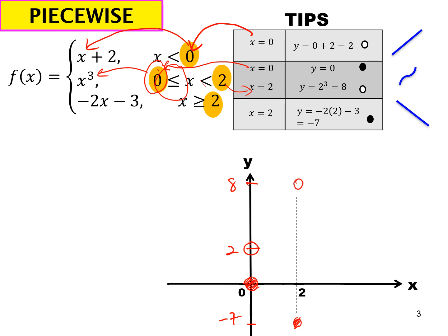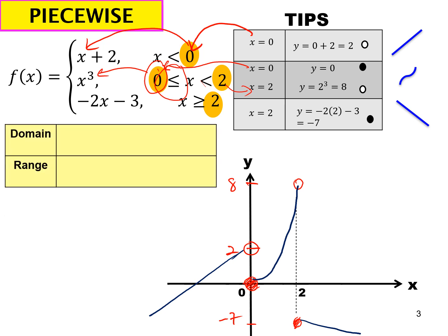To sketch the graph: for x less than 0 it is a linear equation with positive gradient. From 0 to 2 it is a cubic curve. For x greater than or equal to 2 it is a linear equation. The domain is from negative infinity to 0, union 0 to 2, union 2 to infinity. The range goes from negative infinity up to y equals 0, then 0 to 8 open.